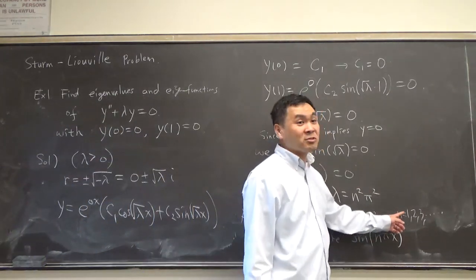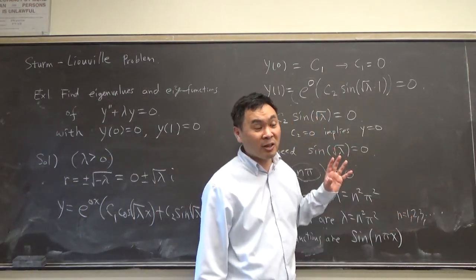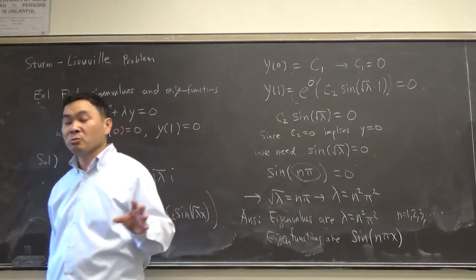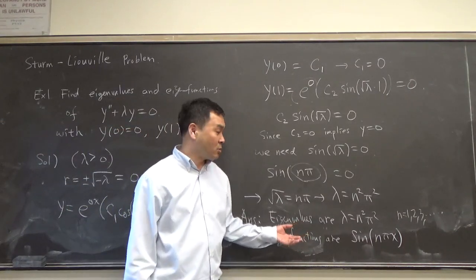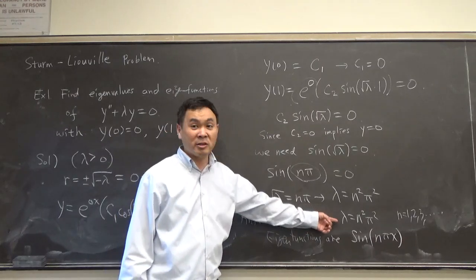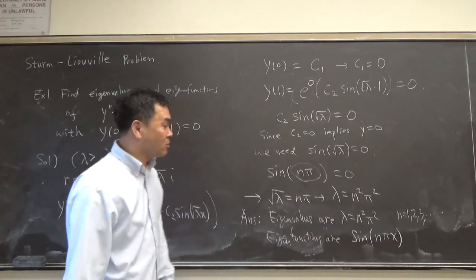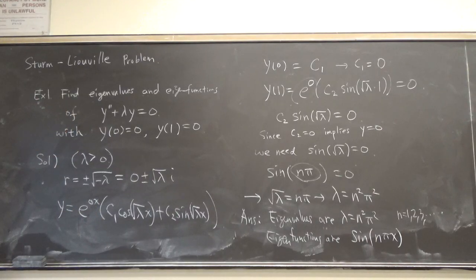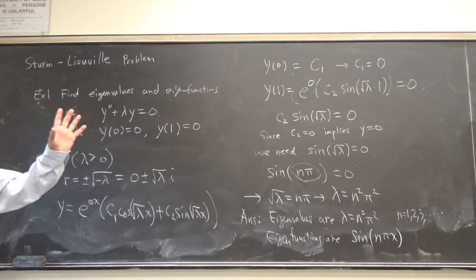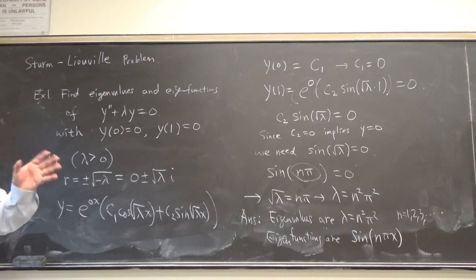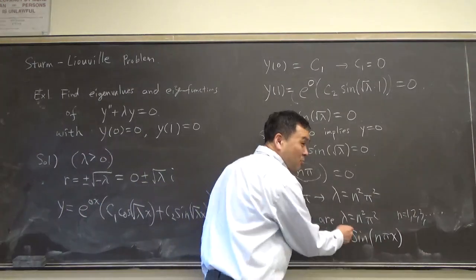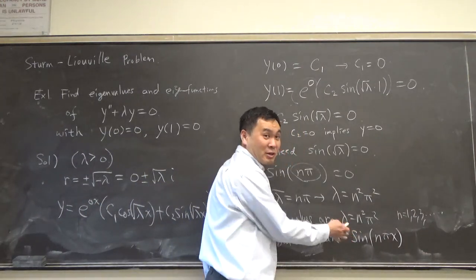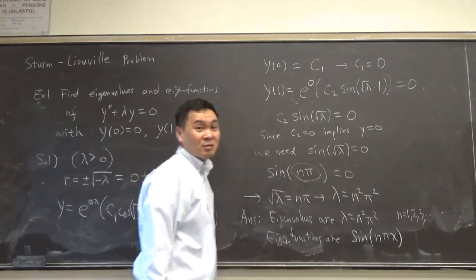Sometimes n would start from zero. For different boundary conditions you might have zero as an eigenvalue with a non-trivial eigenfunction. Here we didn't — we only have positive eigenvalues, so n starts from one. We get rid of c₂ for the same reason as in eigenvectors: you don't write all possible eigenvectors, just one representative. You could write 2, 3, 4, or 5, but you just want to write down the simplest one.